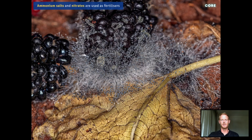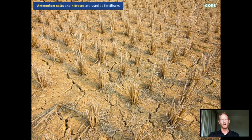In nature, when plants die, the minerals contained within their tissues are returned to the soil by decomposers. In agriculture, most of the crop is removed, causing the soil to become deficient in minerals over the course of repeated harvests.